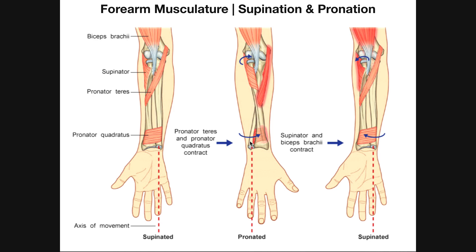Now put your hands back in the pronated position — palms facing down — and then re-supinate, repositioning so your palms face up. That is supination. When you supinate, you go the opposite direction: the ulna doesn't really move, and the radius distally rotates back from on top of the ulna to its original parallel position. That's the main difference between pronation and supination.